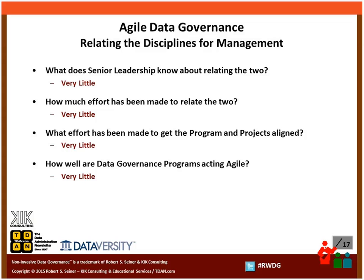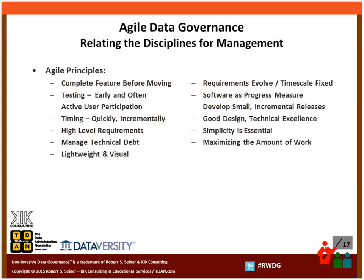Typically data governance programs don't act very agile. When they are documenting things, they're looking for 18 pages of documentation on every data element, wanting data flows defined to such a degree that it takes a lot of time and slows down effort. The last thing the folks on agile teams want is for you to slow down their effort. So we need to relate these two disciplines together, and one of the ways to do that is to look at the different principles associated with the agile development methodology.